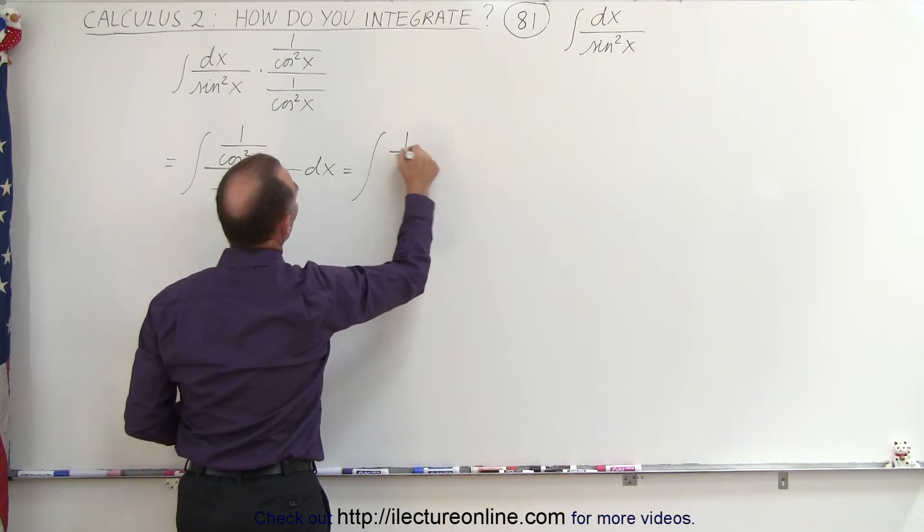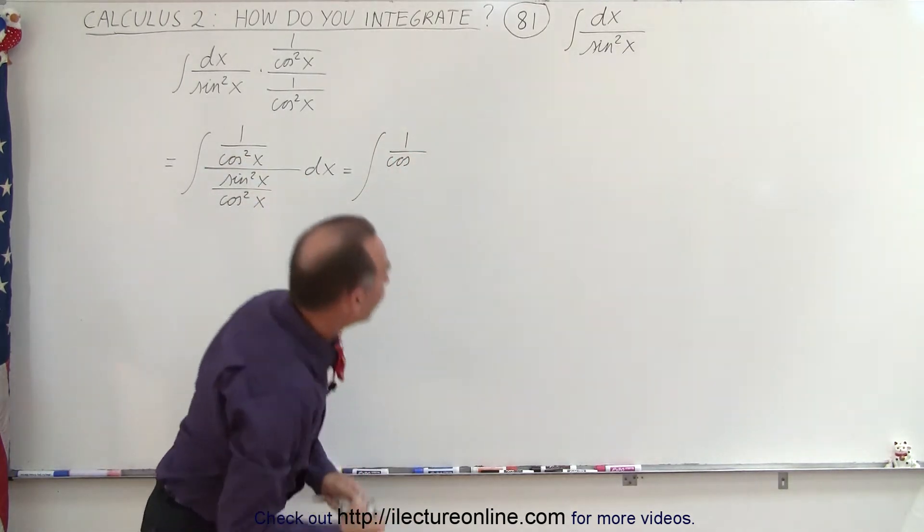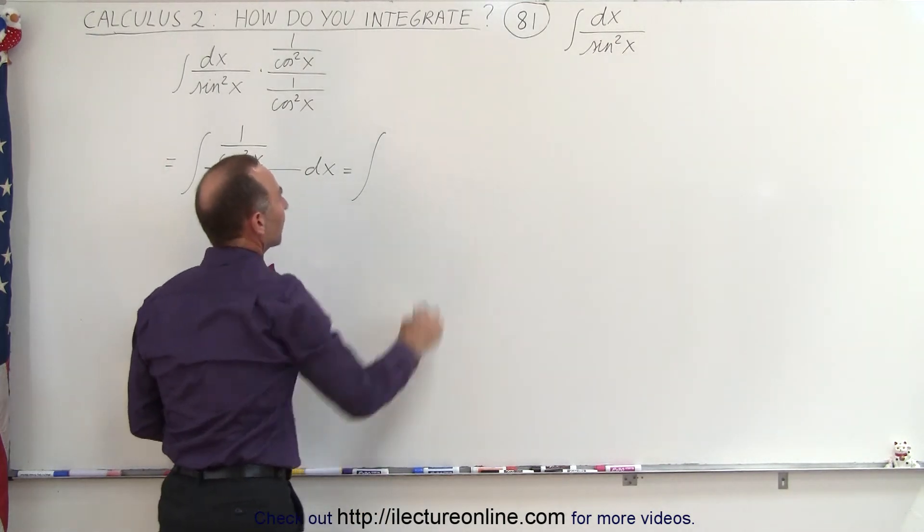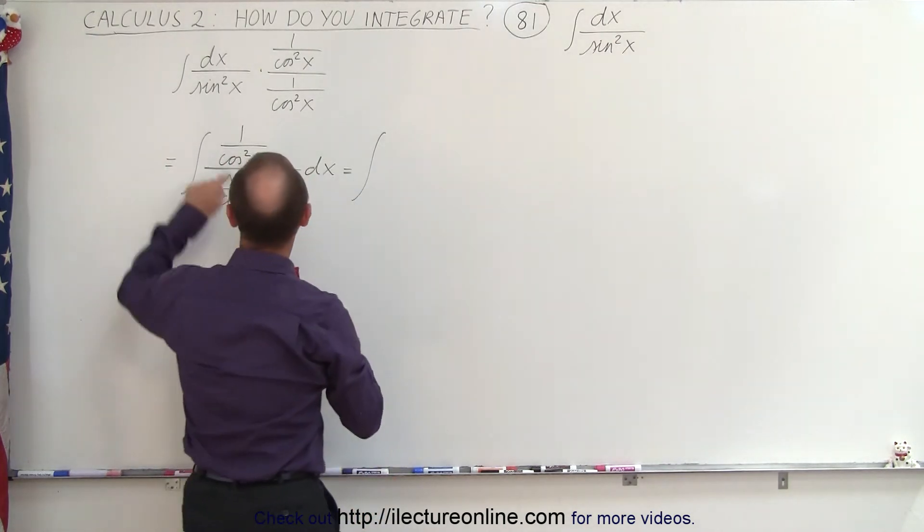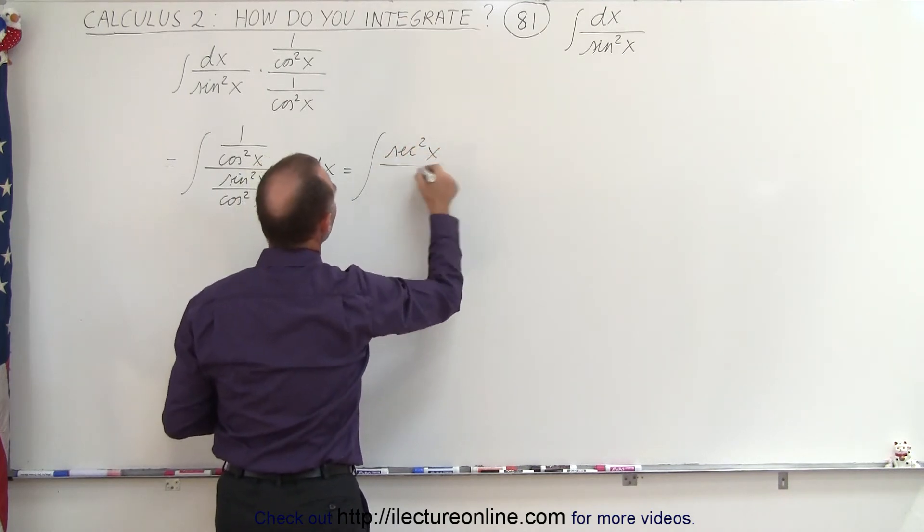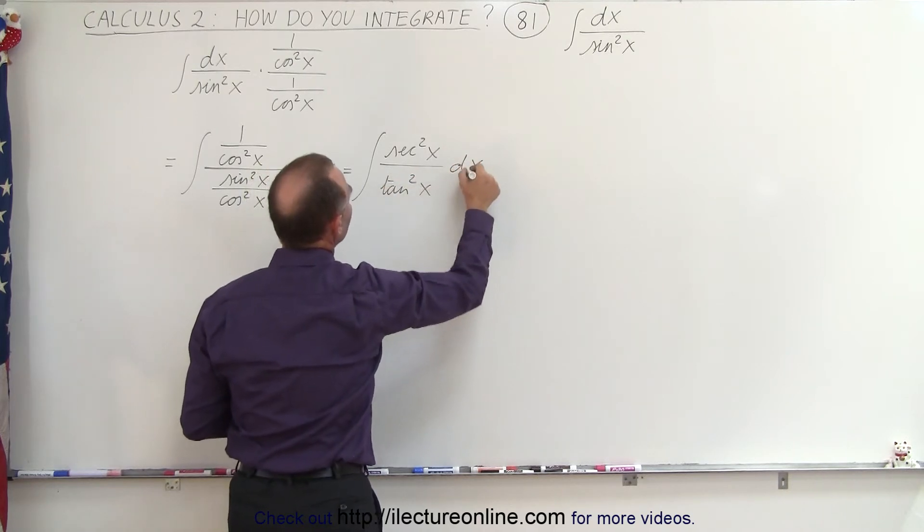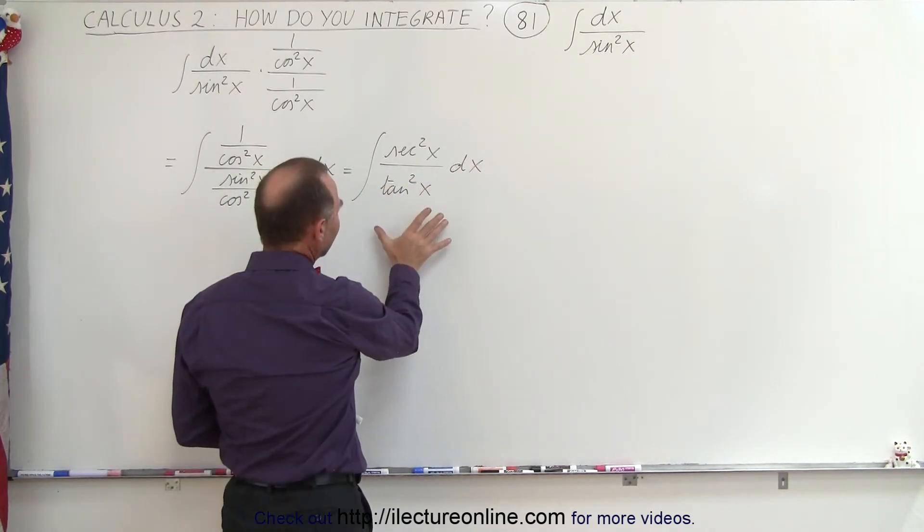So this is equal to the integral of 1 over the cosine squared of x. Just so you can see what that looks like, I'm going to write this 1 over the cosine squared of x as the secant squared of x divided by the tangent squared of x times dx. If you write it like this,